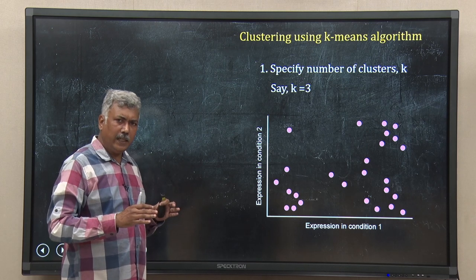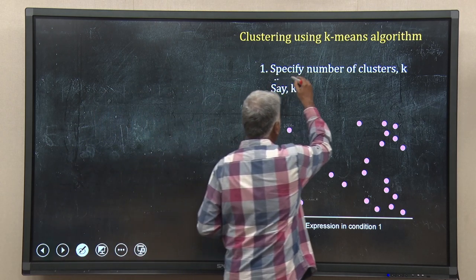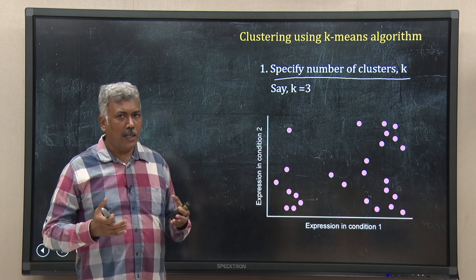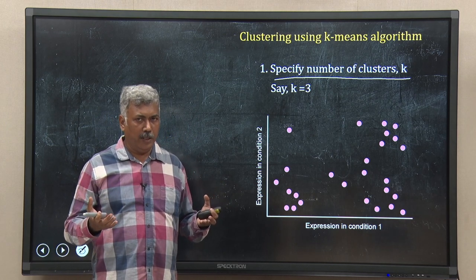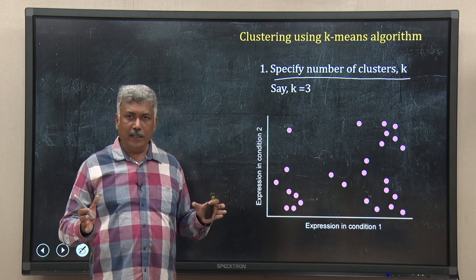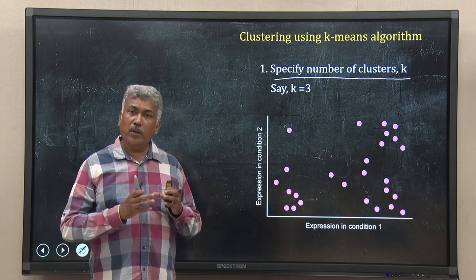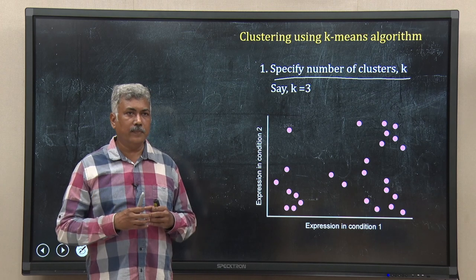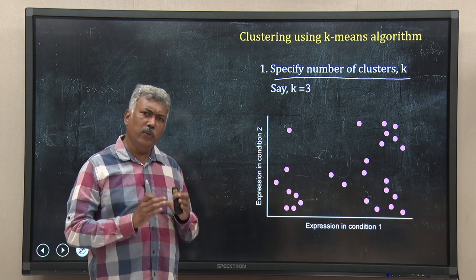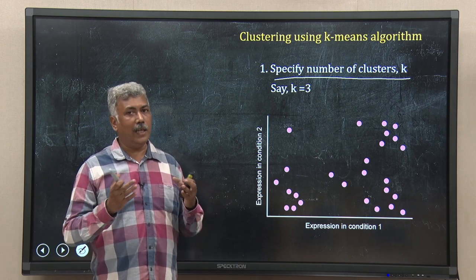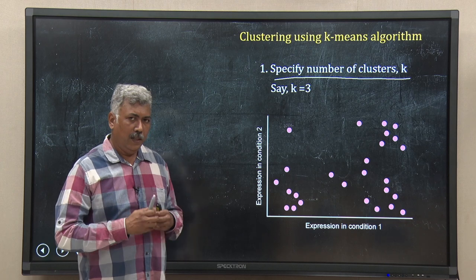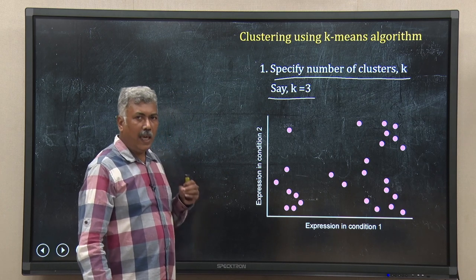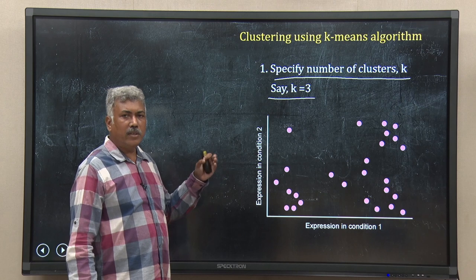The first step in the k-means algorithm is that you have to specify the number of clusters k. Remember, k-means clustering is an unsupervised statistical learning method — I do not have labelled data, I do not know the classes, so I do not know the number of clusters present in my dataset. For the time being, consider you know the number of clusters you want. For example, let me assume k equal to 3. So k is the number of clusters and I have assumed there are three clusters in this data.